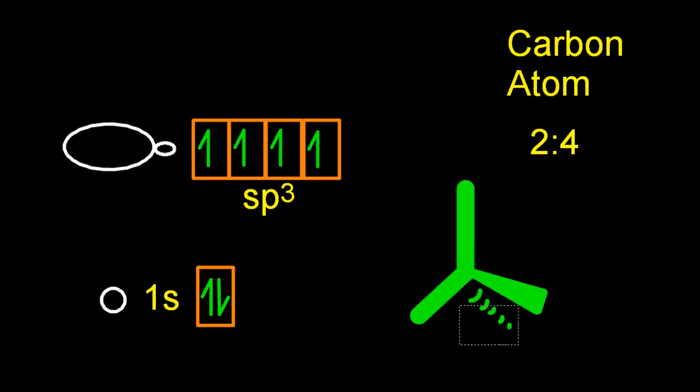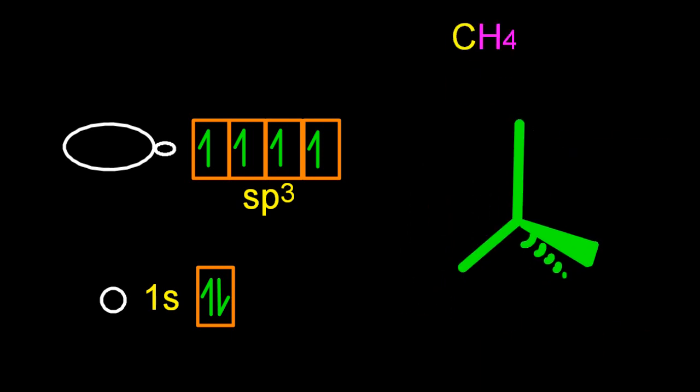And if I have four of these, as indeed I do, because there's four orbitals with four electrons in it, it's going to take up a tetrahedral arrangement. And now I've drawn the tetrahedron in 3D.